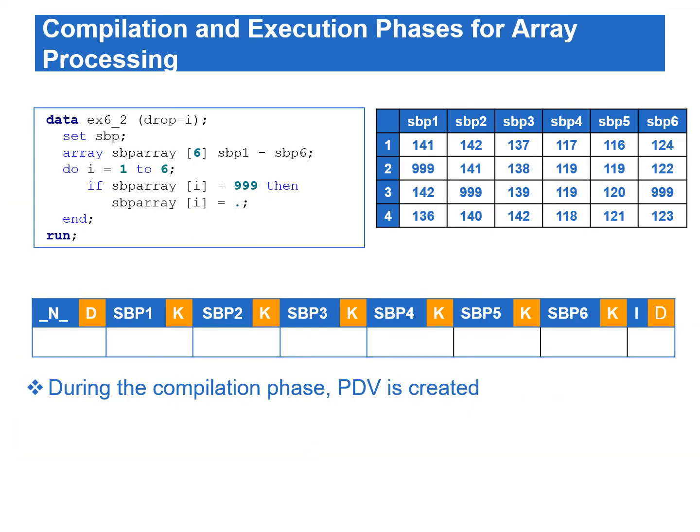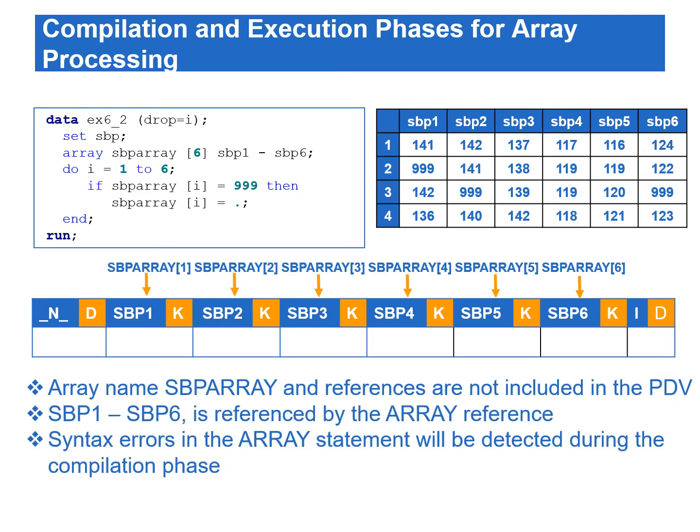Let's go over the compilation and execution phase of this program. During the compilation phase, the PDV is created. The array name SBP_array and array references are not included in the PDV. Each variable SBP1 to SBP6 is referenced by the array reference. Syntax errors in the array statement will be detected during the compilation phase.